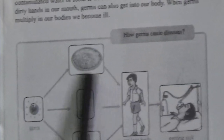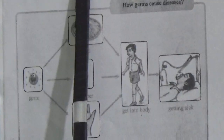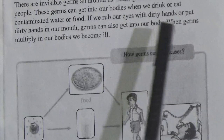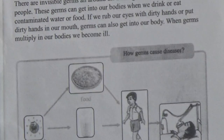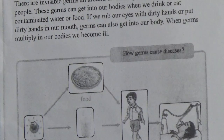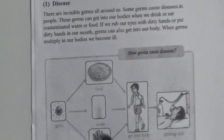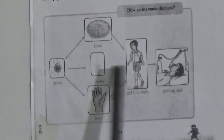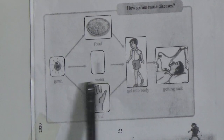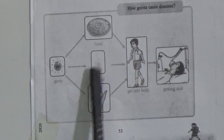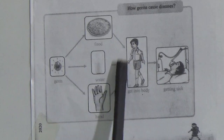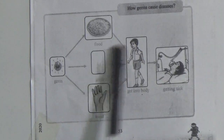See this figure — germs. How do germs cause disease? If we rub our eyes with dirty hands and put these dirty hands in our mouth, germs can also get into our body. Then we will become ill.